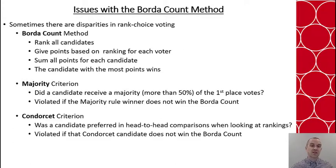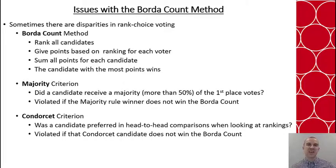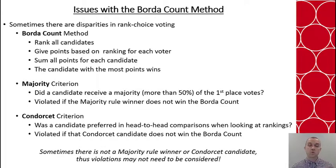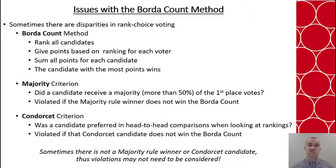Another situation is called the Condorcet candidate. You look at the head-to-heads of each candidate against the others, and if someone gets more head-to-head votes than every other candidate in every comparison, that's the Condorcet candidate. If that candidate does not also win the Borda count, then the Condorcet criterion is violated. It's important to recognize these criteria don't always apply — sometimes no one gets over 50% of first-place votes, or there's no head-to-head winner. But when they do apply, we want to understand what that tells us about how people voted.